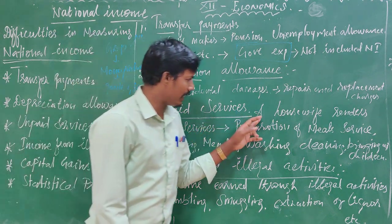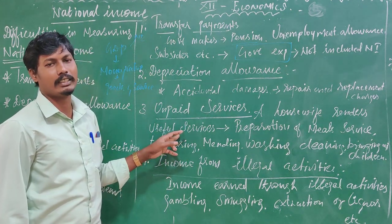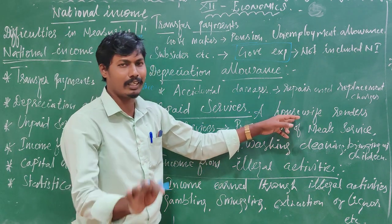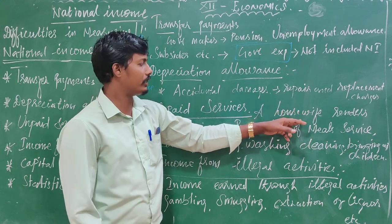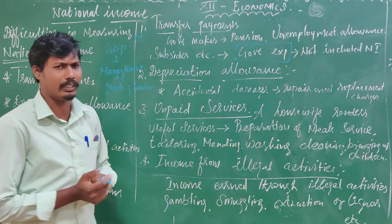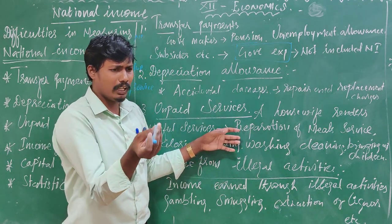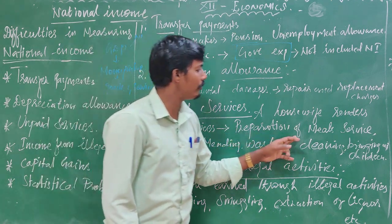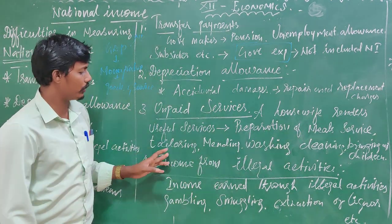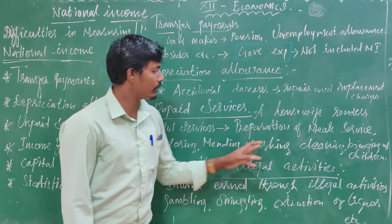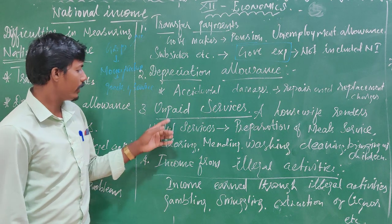The housewife is a problem in measuring national income. No one is working on behalf of the housewife. The preparation of meals, washing, cleaning, and care of children — these are unpaid services.